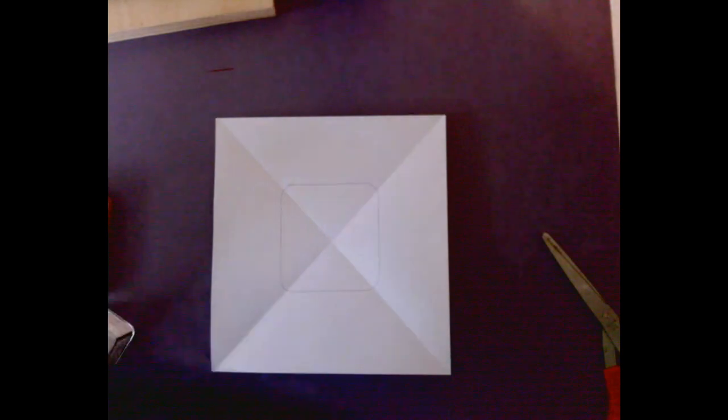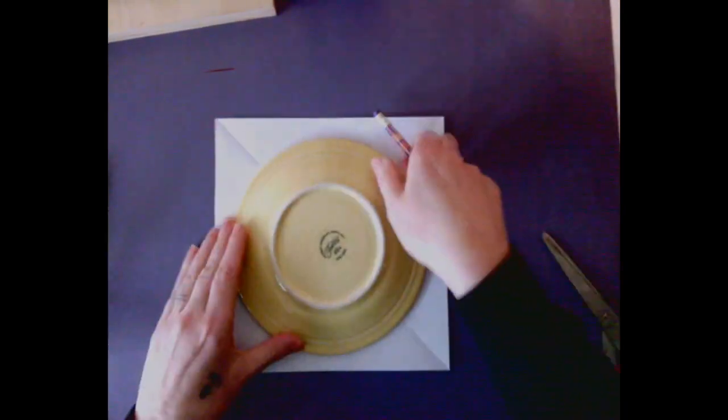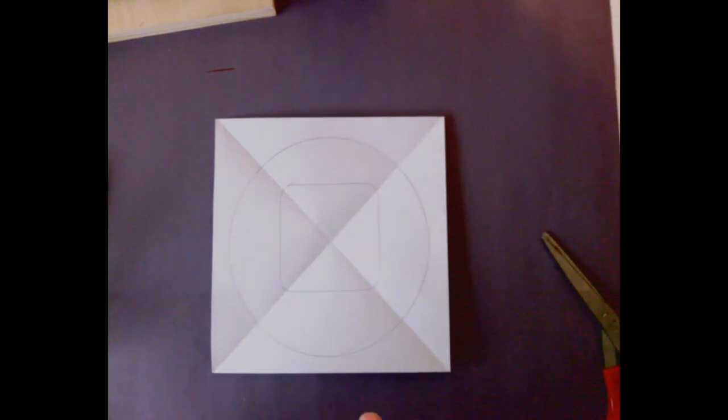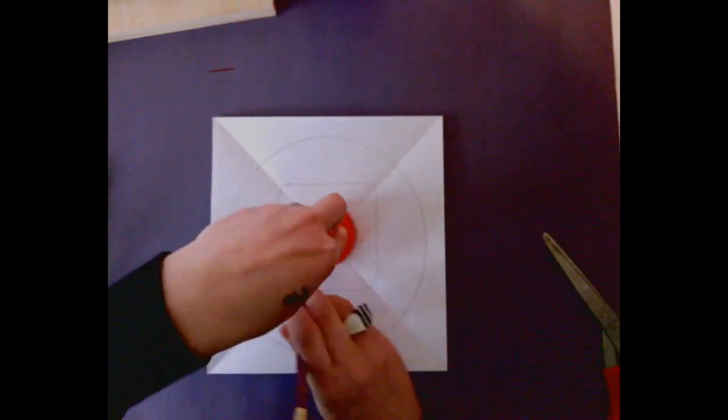Now alternate between circles and squares. So I used a square and now I'm going to use a circle, and I'm going to trace the circle. And then you just keep going back and forth alternating circles and squares and placing them inside of each other.